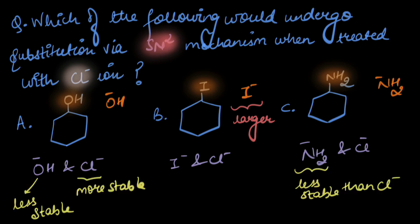The attacking nucleophile Cl⁻ is more stable than the leaving group OH⁻, so OH⁻ wouldn't want to leave. Similarly, in the third case, nitrogen is smaller than Cl⁻, so the negative charge would be more stable on the chlorine atom. NH₂⁻ would also not want to leave.